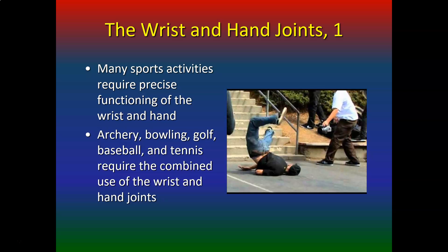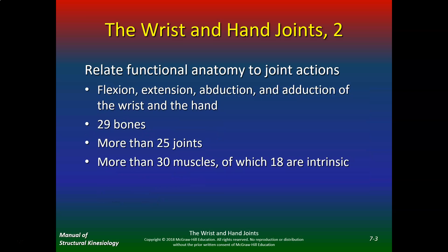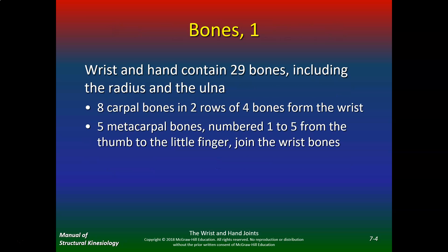Relating functional anatomy to joint actions: you can do flexion, extension, abduction, and adduction of the wrist and hand. There are 29 bones, more than 25 joints, and more than 30 muscles, of which 18 are intrinsic — meaning they stay within the hand. The wrist and hand contain 29 bones including the radius and the ulna, eight carpal bones in two rows, and five metacarpal bones.